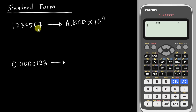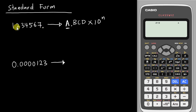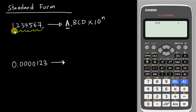So I'm going to show you how to change a number into standard form, because standard form can only allow you to start with one digit. So for this number, the decimal is after 7. What I want to do is move this decimal to the place between 1 and 2, because I can only accept one number followed by a decimal. I need to calculate how many places I moved: 1, 2, 3, 4, 5, 6. So this one is 1.234567 multiplied by 10 to the power of 6.